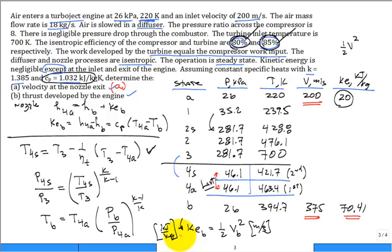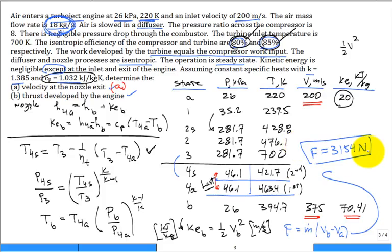So, now we can calculate the thrust. The forward thrust will be the mass flow rate, which was given 18 kilograms per second, times the change in the speed, VB minus VA. And I'm out of room again, so the forward thrust comes in at 3,154 newtons. Hopefully, that helped. Clear?